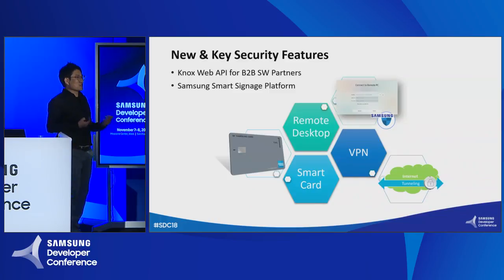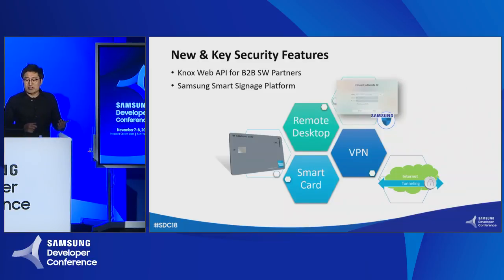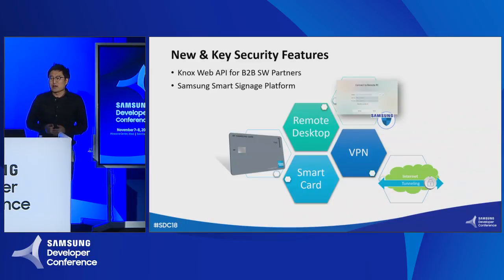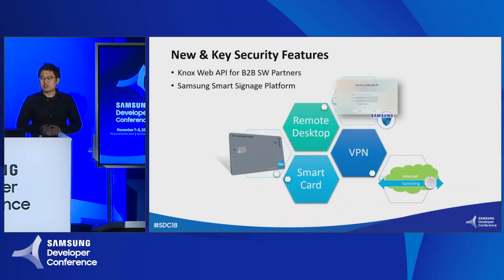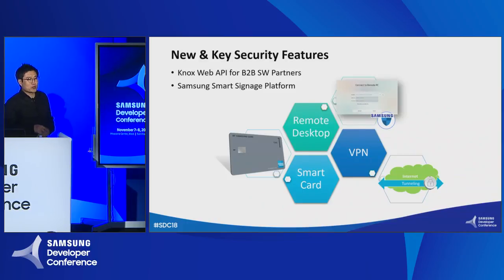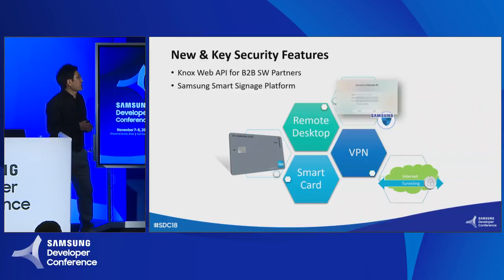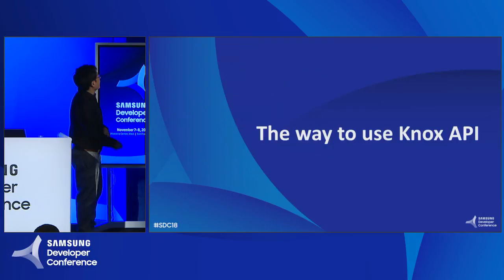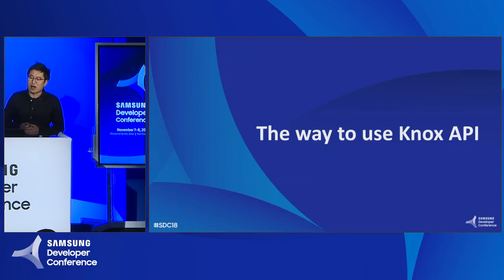Today, I am pleased to introduce new features and key security features of our Knox platform. These capabilities are provided by the Samsung Smart Signage Platform's Knox API, which is available to B2B partners. New features include smart card and virtual private network. These two functions can be applied to a variety of services and are essential for security-critical services. I will also introduce remote desktop protocol that can help software developers create innovative services in a B2B environment. Let's learn more about how you can use these features to create the services you want.